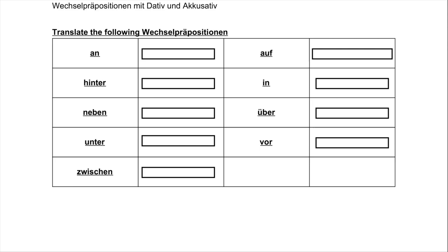Hallo Deutschlerner! Today we are going to go over this worksheet about Wechselpräpositionen, also known as two-way prepositions. They are used with the accusative case when you are changing a location or changing a state. So if you change from one thing into another, or if you are going from here to there, that is accusative. If it is stationary and not going anywhere, that is dative.